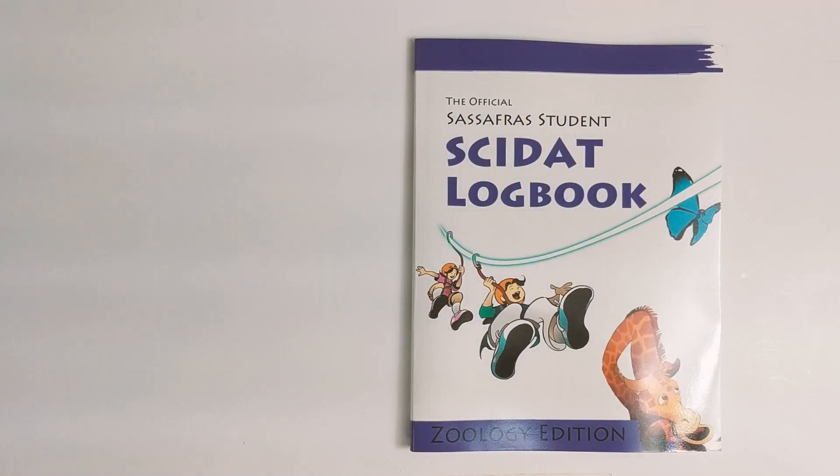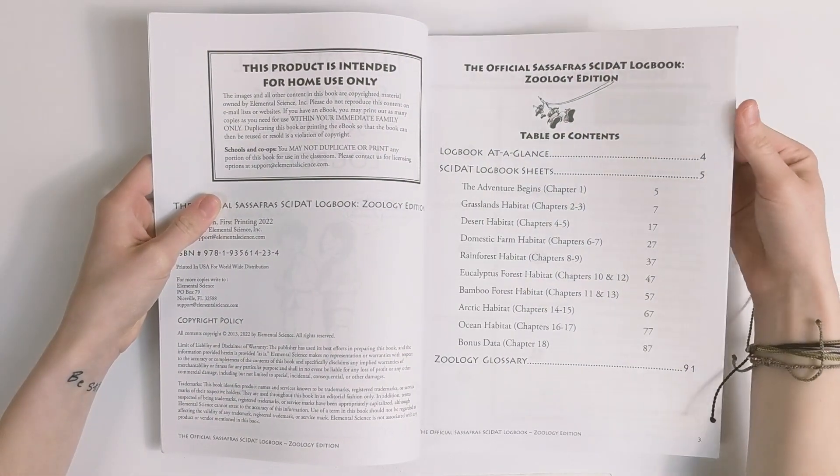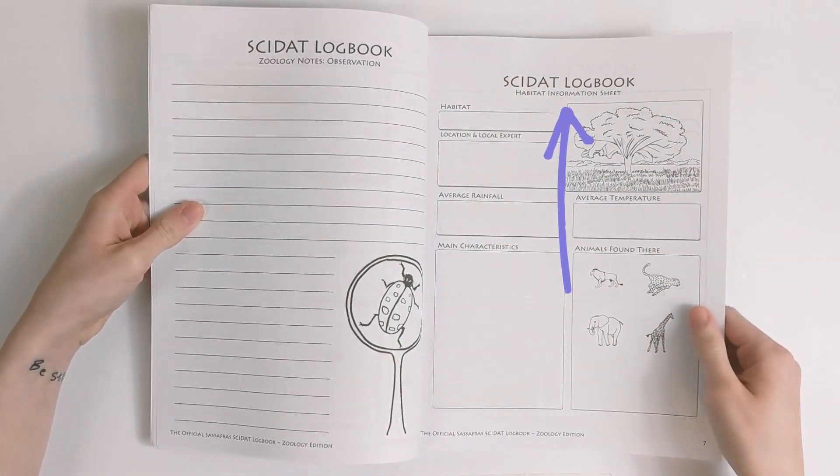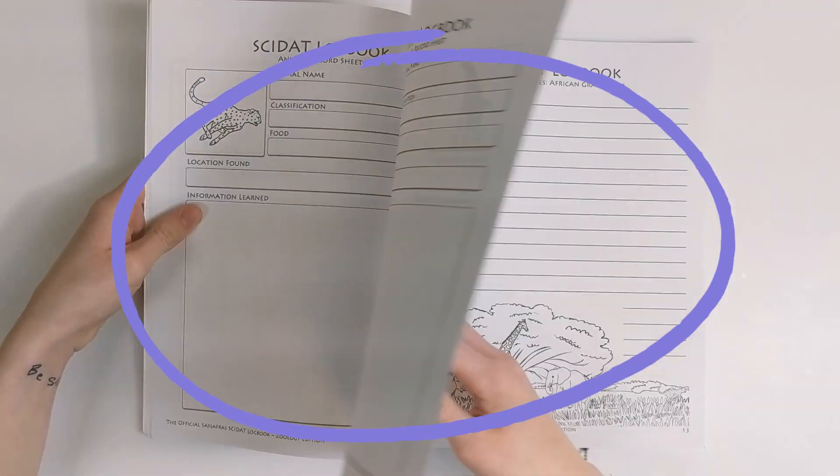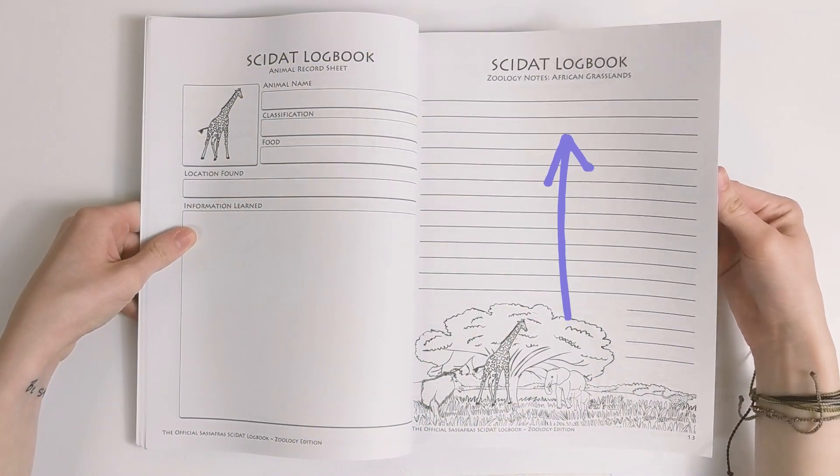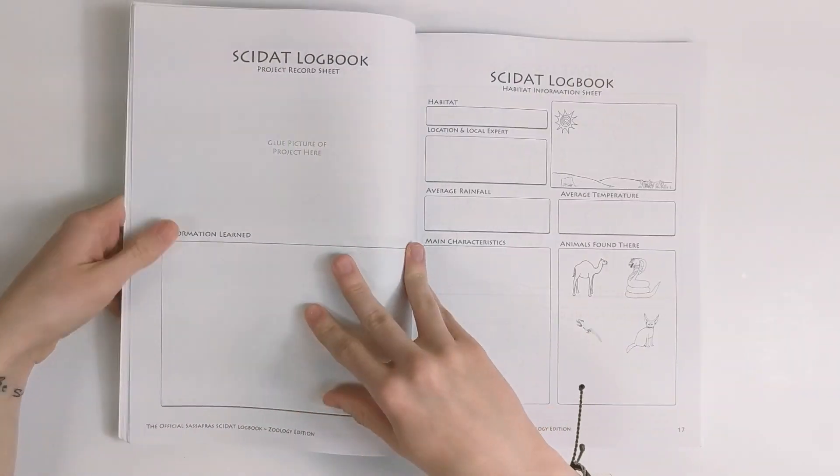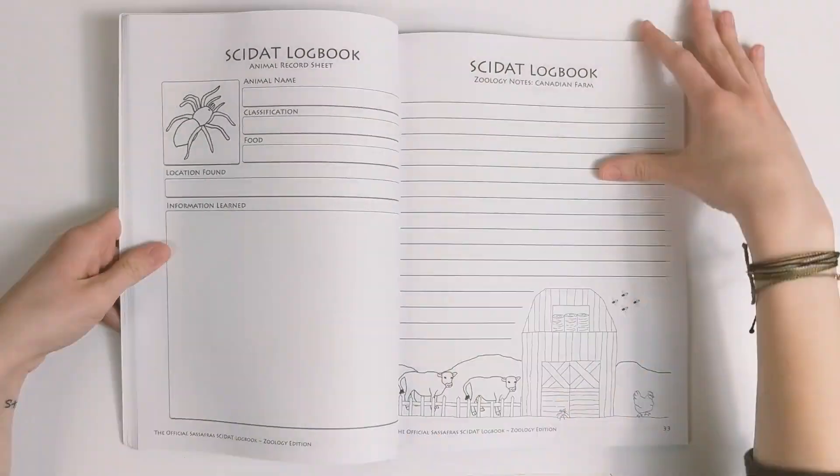Now let's take a look at the Zoology Sci-Dat Logbook. This is your student's place to document their adventure with the Sassafras twins. You'll find Habitat Information Sheets and Around the World Sheets, along with Animal Record Sheets for each topic the twins study, Zoology Note Sheets to write down anything else the students want to, and Project Record Sheets. Each location the twins visit has the same sheets for the students.